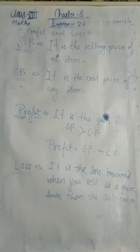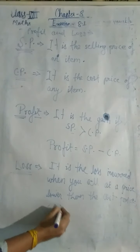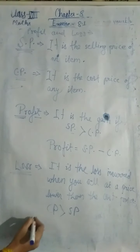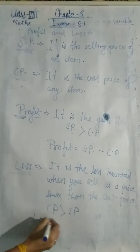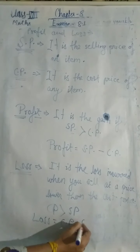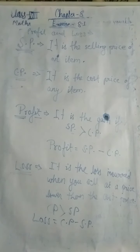Second: loss. It is the loss incurred when you sell at a price lower than the cost price. This means CP is greater than SP. Loss equals CP minus SP, that is cost price minus selling price.